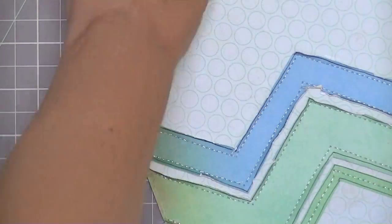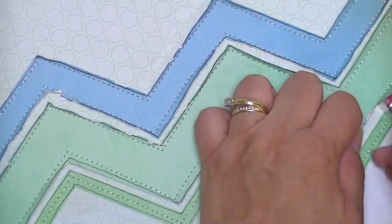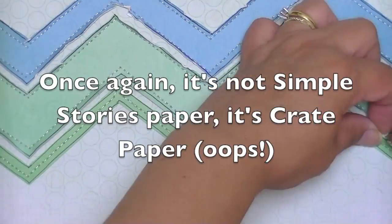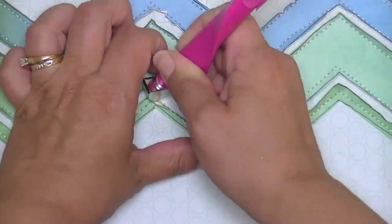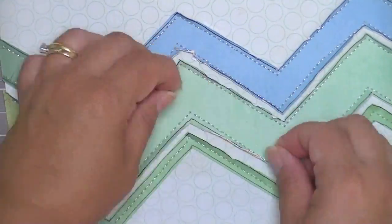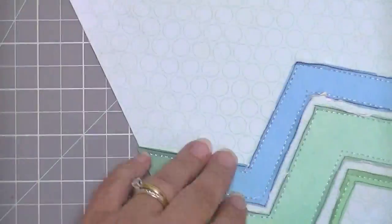Because this paper is pretty stiff. It's fairly the Simple Stories cardstock. Like the paper that their pattern paper is on is pretty close to cardstock. Like it's a pretty heavy duty paper. So you really have to actually work at it to distress it like this.